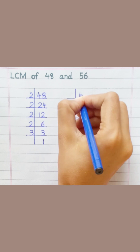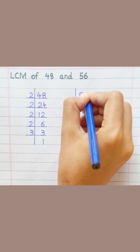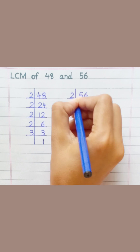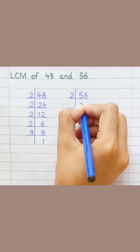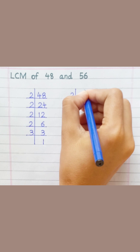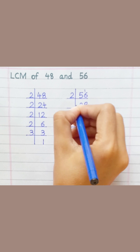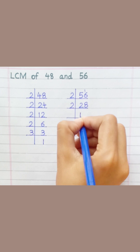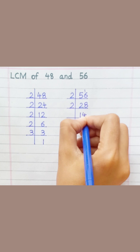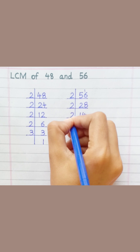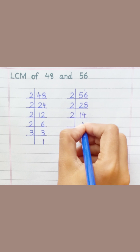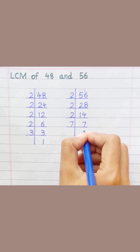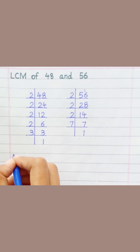56: two twos are four, two eights are sixteen. Two ones are two, two fours are eight. Two sevens are fourteen, seven ones are seven.